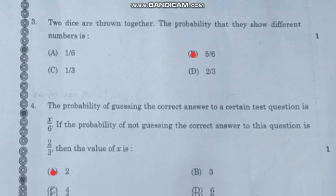Question number 3: Two dice are thrown together. The probability that they show different numbers is—the correct answer is option B, 5/6.